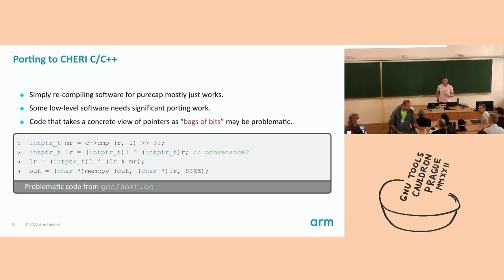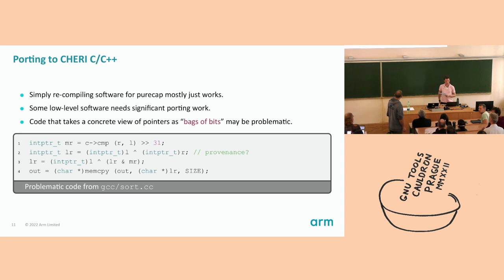Audience comment: In this specific example, the provenances of L and R will be the same because they are pointers into the same array — it's a sorting routine — so it always happens to do the right thing, even always taking provenance from L, because it's going to be the same as R. So the problem is solved here.